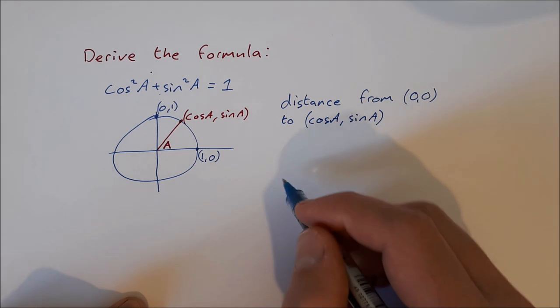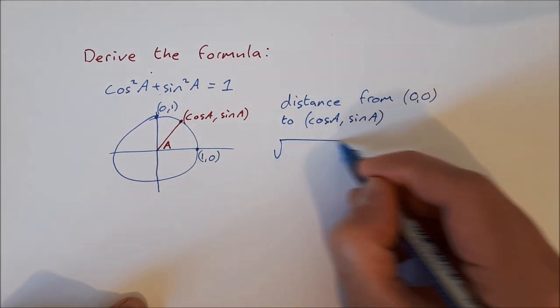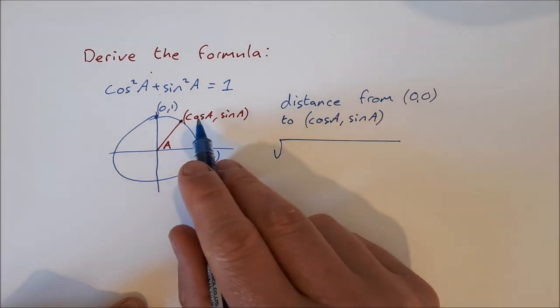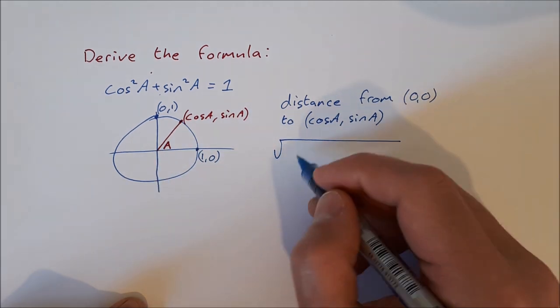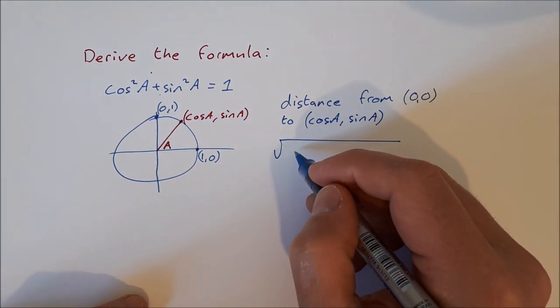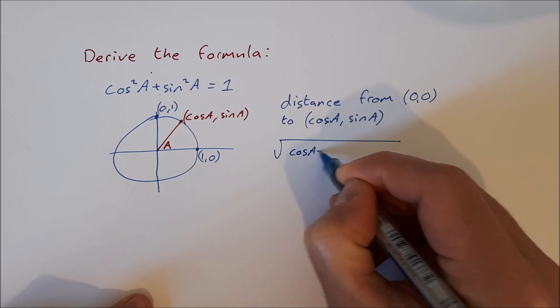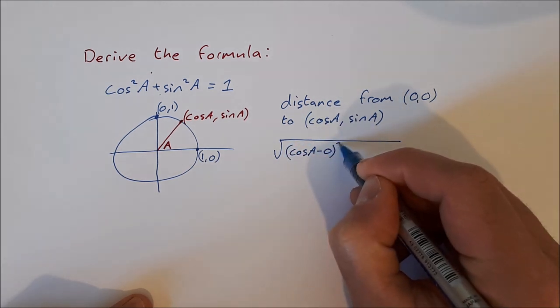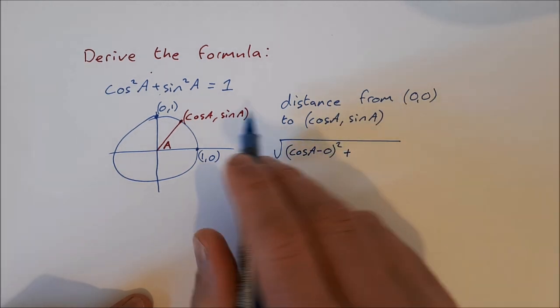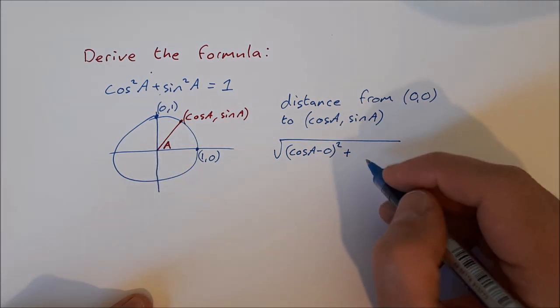We use the distance formula, so it's the square root of (cos a - 0)² plus (sin a - 0)².